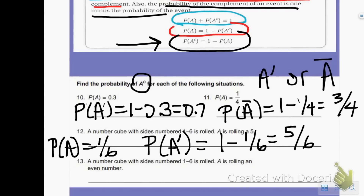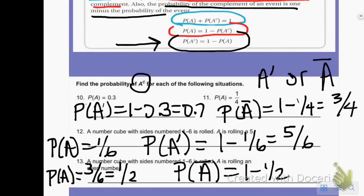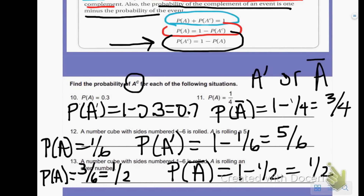Question 13: a number cube with sides numbered 1 through 6 is rolled. Event A is rolling an even number. The probability of A — there are 3 even numbers on a die out of a possible 6 — reduces to 1/2. To find the probability of the complement, written as A bar, it equals 1 minus 1/2, which is 1/2.